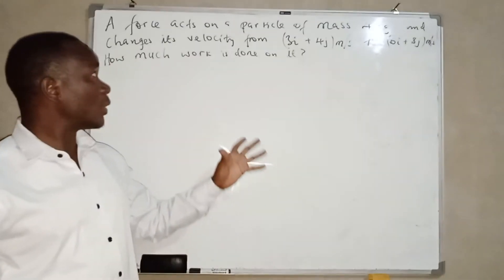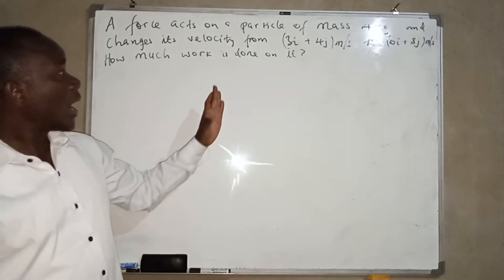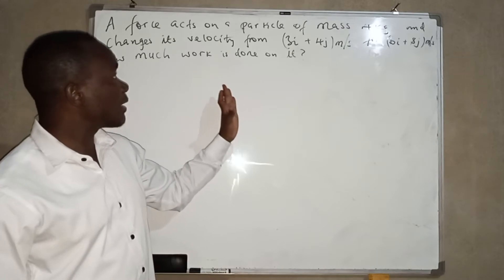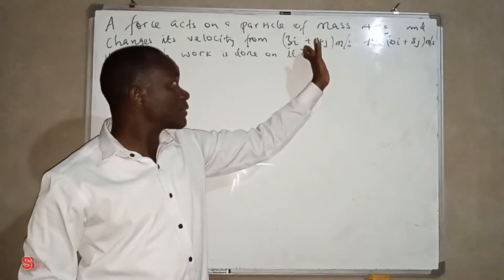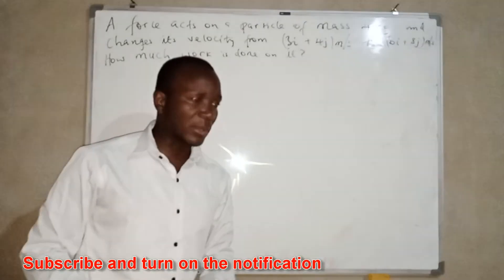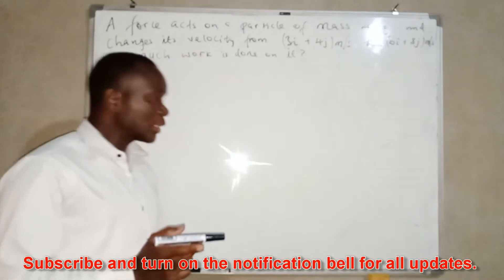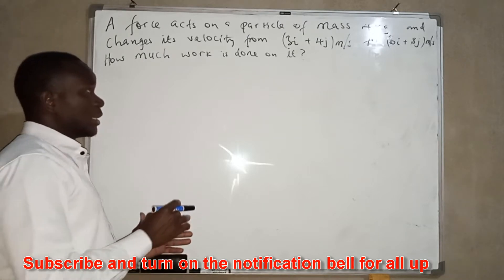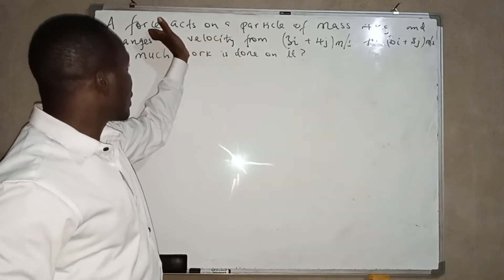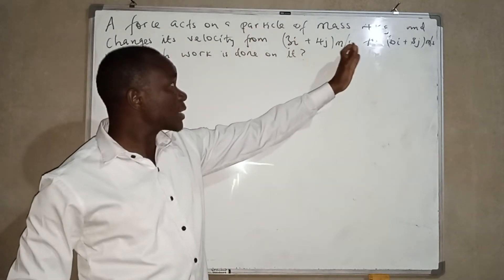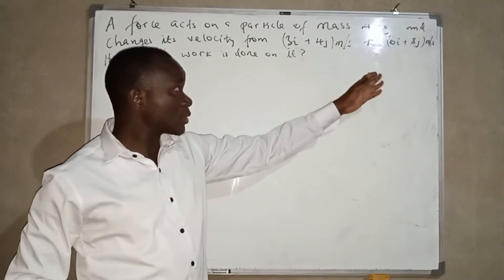In this question, we're going to find the amount of work done in changing the velocity of this particle of 4kg mass from this velocity to this velocity. We know that work is force times distance in direction of that force. Since the force is acting on this particle and changing the velocity from this to this...